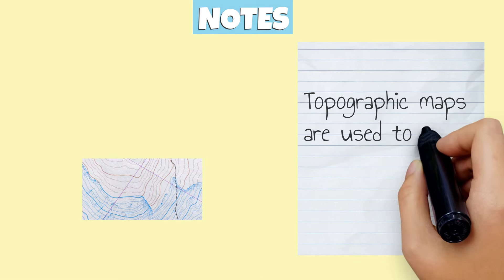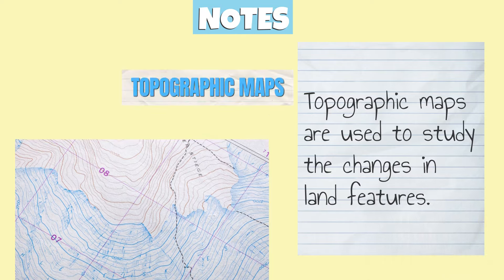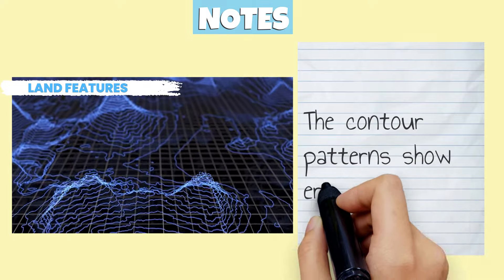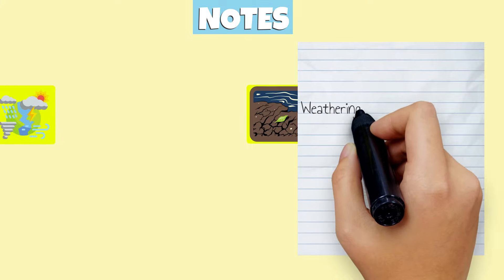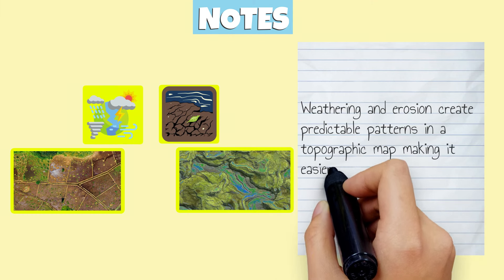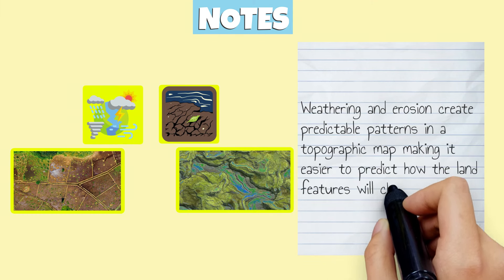Topographic maps are used to study the changes in land features. The contour lines show different elevations of the land. The contour patterns show erosional changes. Weathering and erosion create predictable patterns in a topographic map, making it easier to predict how the land features will change over time.